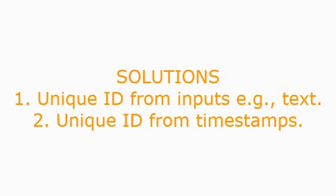We propose two solutions. The first is to create a unique ID from inputs such as text, where the person uses maybe an ID number, their name and surname. The second solution is based on the timestamps that Google Spreadsheets automatically generates when someone submits a form. At the end of the discussion there will be the formulas, which you can pause the screen or use a screen grabber to print out.